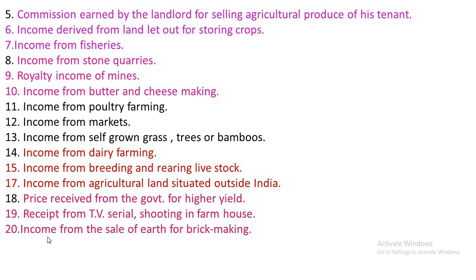Number 14 — Income from dairy farming. Number 15 — Rearing livestock, including breeding and rearing of sheep, goat, cow and calf — whatever it may be — shall be treated as income from business.